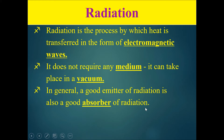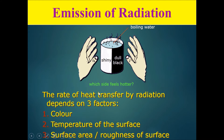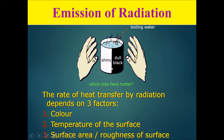In general, a good emitter of radiation is also a good absorber of radiation. Now let's talk about the rate of heat transfer by radiation — how do you pass heat faster or slower by radiation? It depends on three factors: the color of the surface, the temperature of the surface, and the surface area or roughness of the surface.